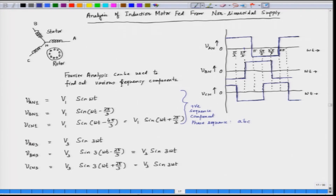A followed by B followed by C, and then it repeats A, B, C. What about the third harmonic? If we see the third harmonic, we see that the third harmonic components are co-phasal — here we have 3ωt, here also we have 3ωt, and the same 3ωt. So they are actually co-phasal, and we can say this is a zero sequence component. It means phase A, phase B, phase C are in the same phase.